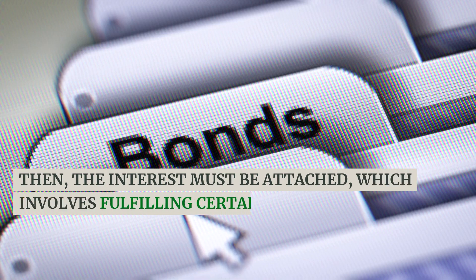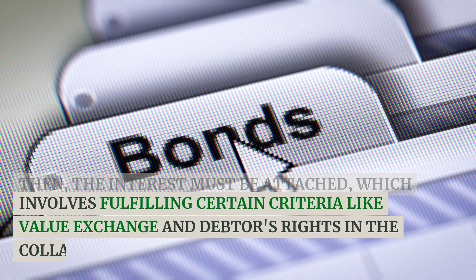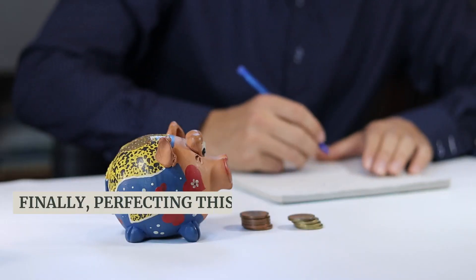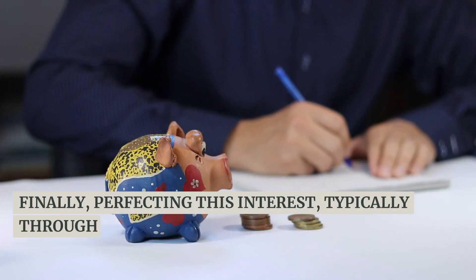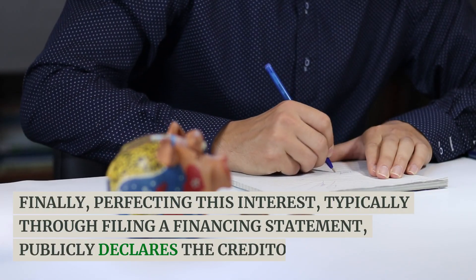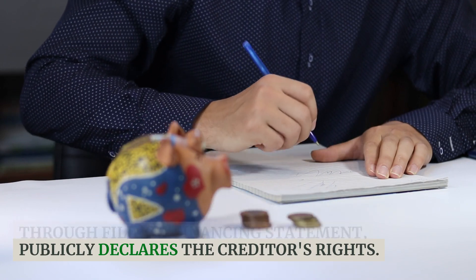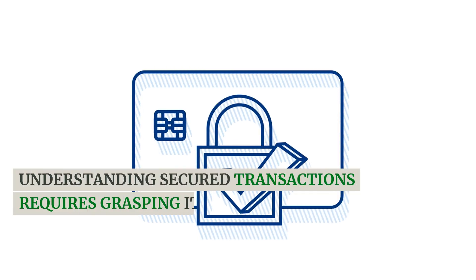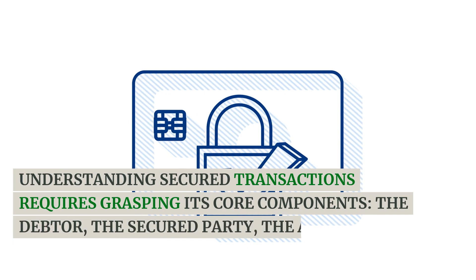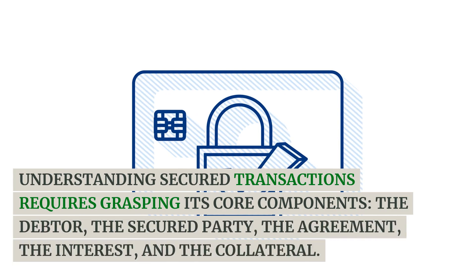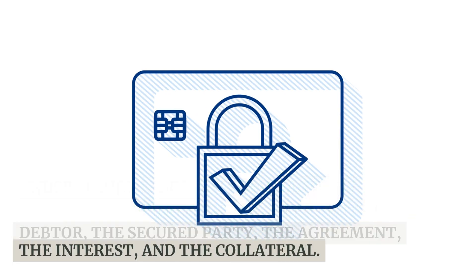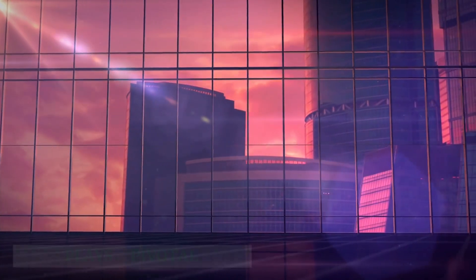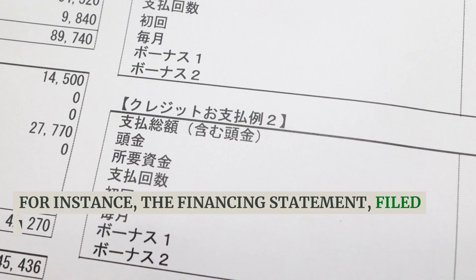The interest must then be attached, which involves fulfilling certain criteria like value exchange and the debtor's rights in the collateral. Finally, perfecting this interest — typically through filing a financing statement — publicly declares the creditor's rights. Understanding secured transactions requires grasping its core components: the debtor, the secured party, the agreement, the interest, and the collateral, each playing a pivotal role.